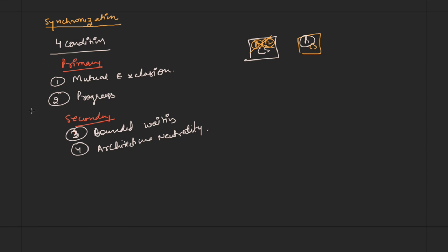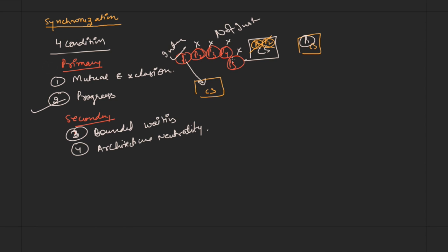Progress means: no process running outside the critical section should block another interested process from entering the critical section when the critical section is free. If processes P2, P3, P4, and P5 are not interested in entering the critical section, they should not stop process P1, which is interested, from entering it. That is called progress.